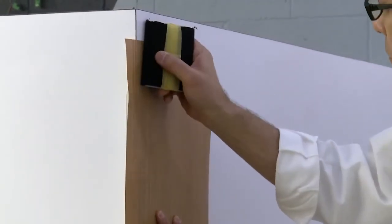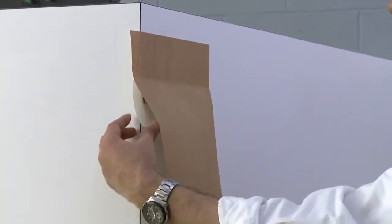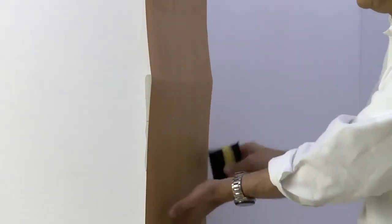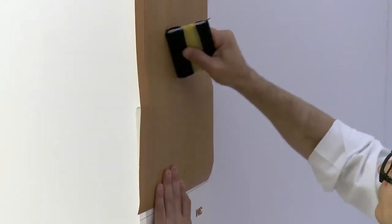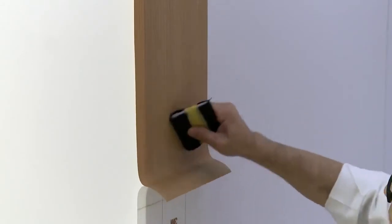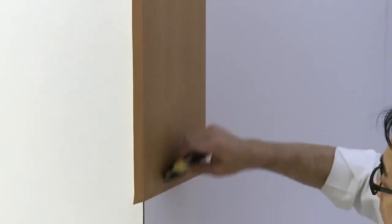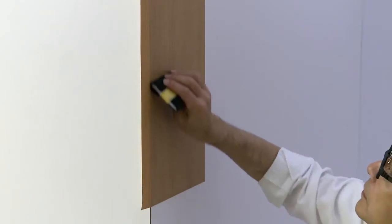The proper squeegee technique is to work from the center to edge, center to edge, always pushing the air to the nearest edge and using firm overlapping strokes. Continue removing more liner and squeegeeing the film onto the wall. And then go over all edges again.